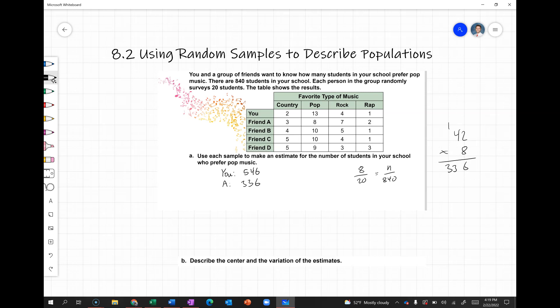For friend B, it's going to be 10 times 42, because we've got 10 people for friend B who preferred pop music. We know that 10 times 42 would be 420.